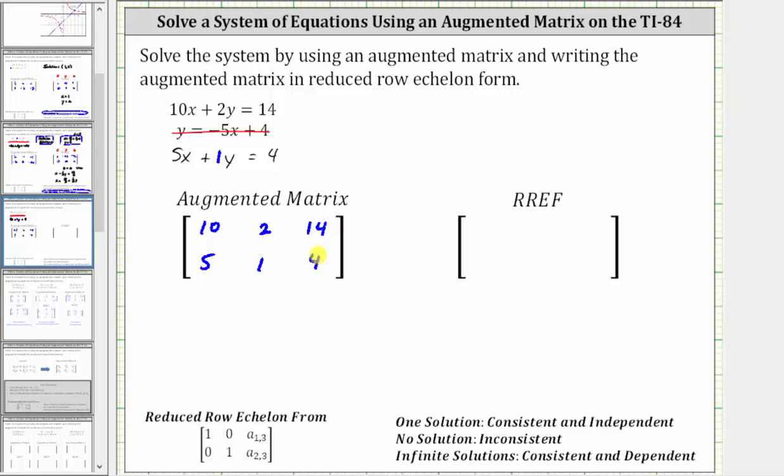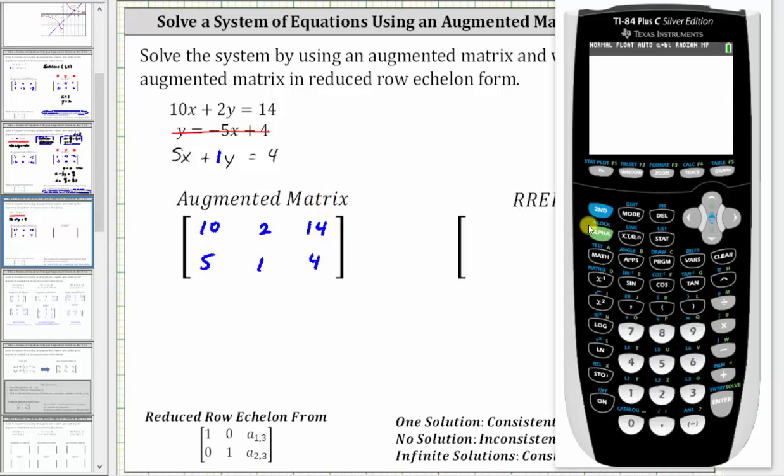And now we enter the augmented matrix in the TI-84. We press SECOND, x to the power of negative 1 for the matrix menu, right arrow twice for edit. Let's enter the matrix in matrix A, so we press ENTER. Here we enter the dimensions, which is a 2 by 3 matrix, which is already entered. So we can just press ENTER, ENTER, and now we enter the elements. After every entry, we press ENTER. So we press 10, ENTER, 2, ENTER, and so on.